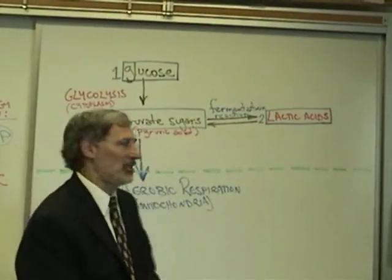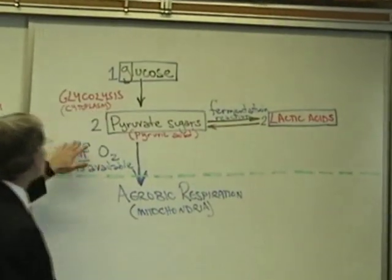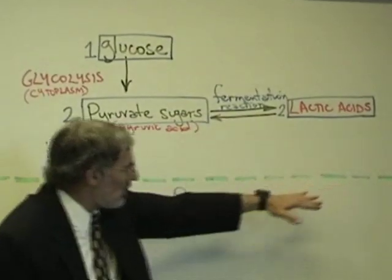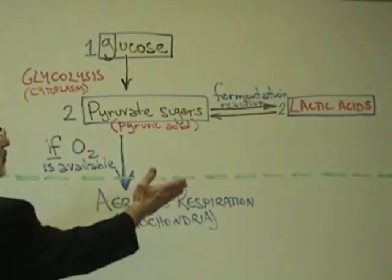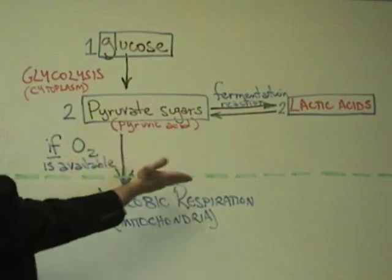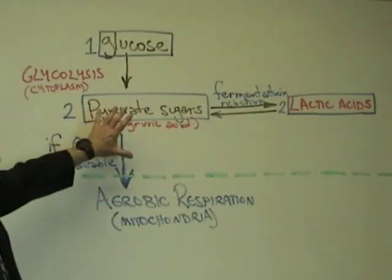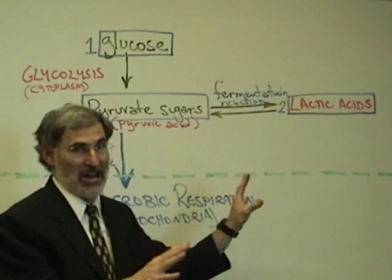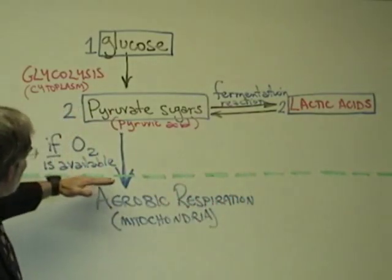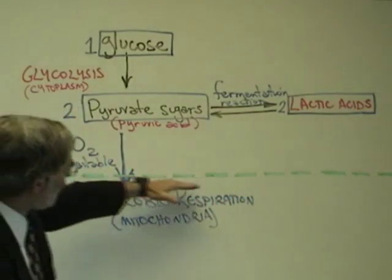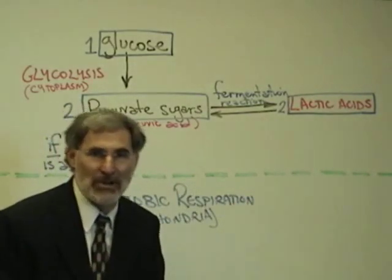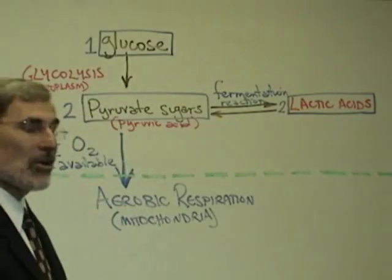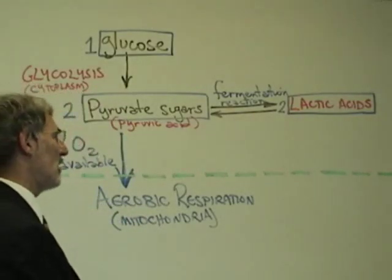However, if the muscle cells do not have oxygen available to them, the pyruvate sugars will be converted into lactic acid. This reaction is called fermentation. It occurs in the cytoplasm of the cell. The reactions above the dashed line occur in the cytoplasm without oxygen, and those below occur in the mitochondria as part of aerobic respiration, only if oxygen is available.